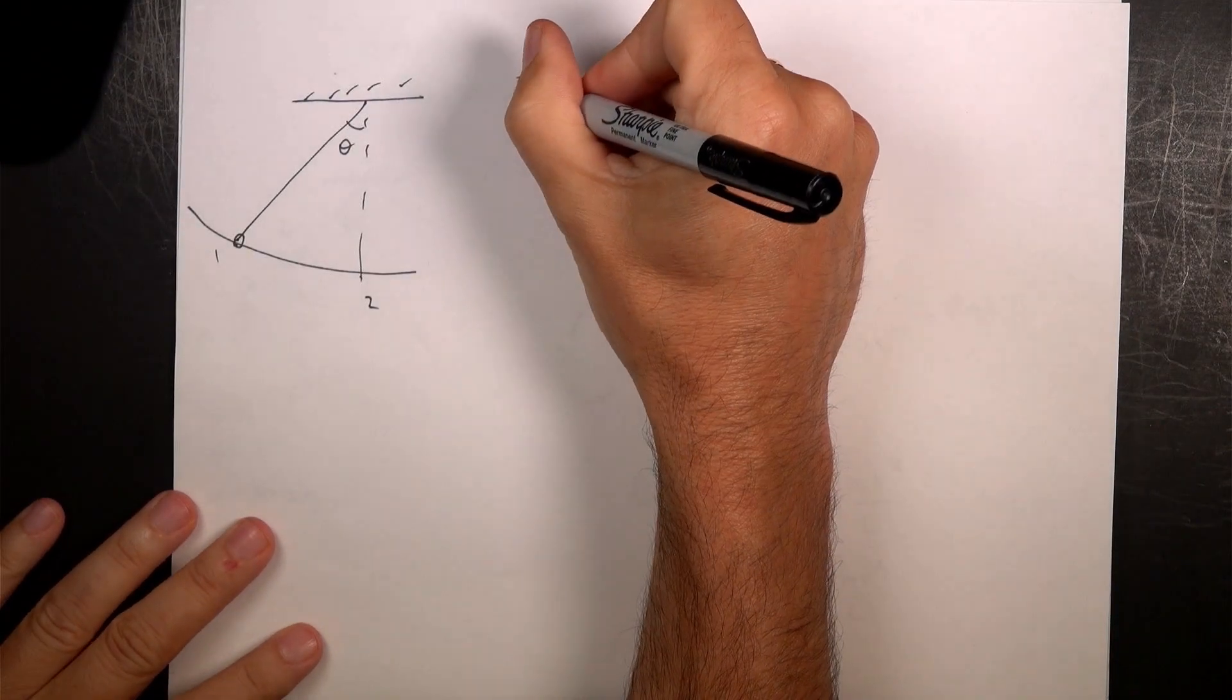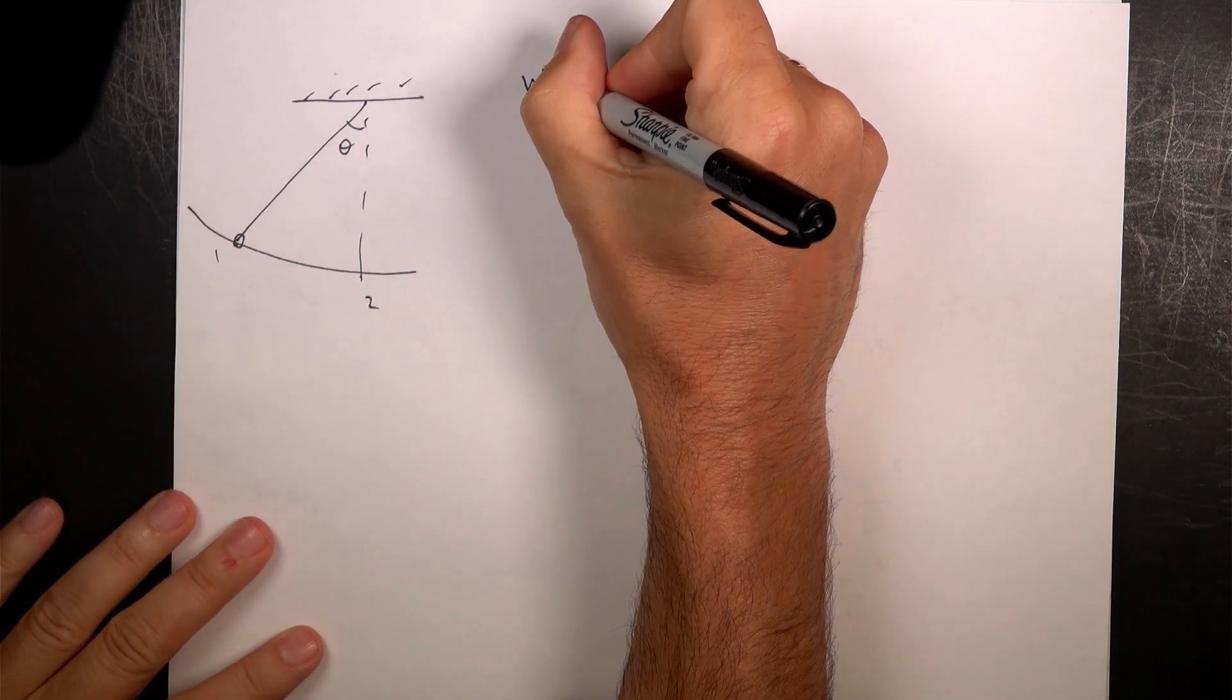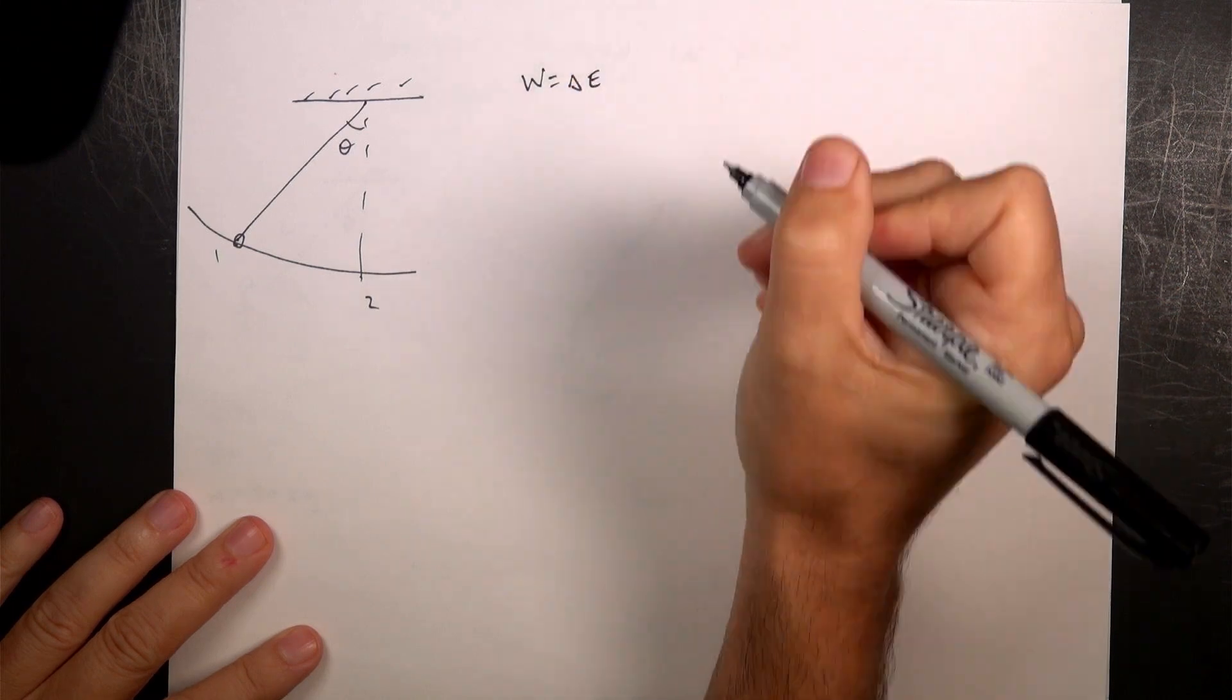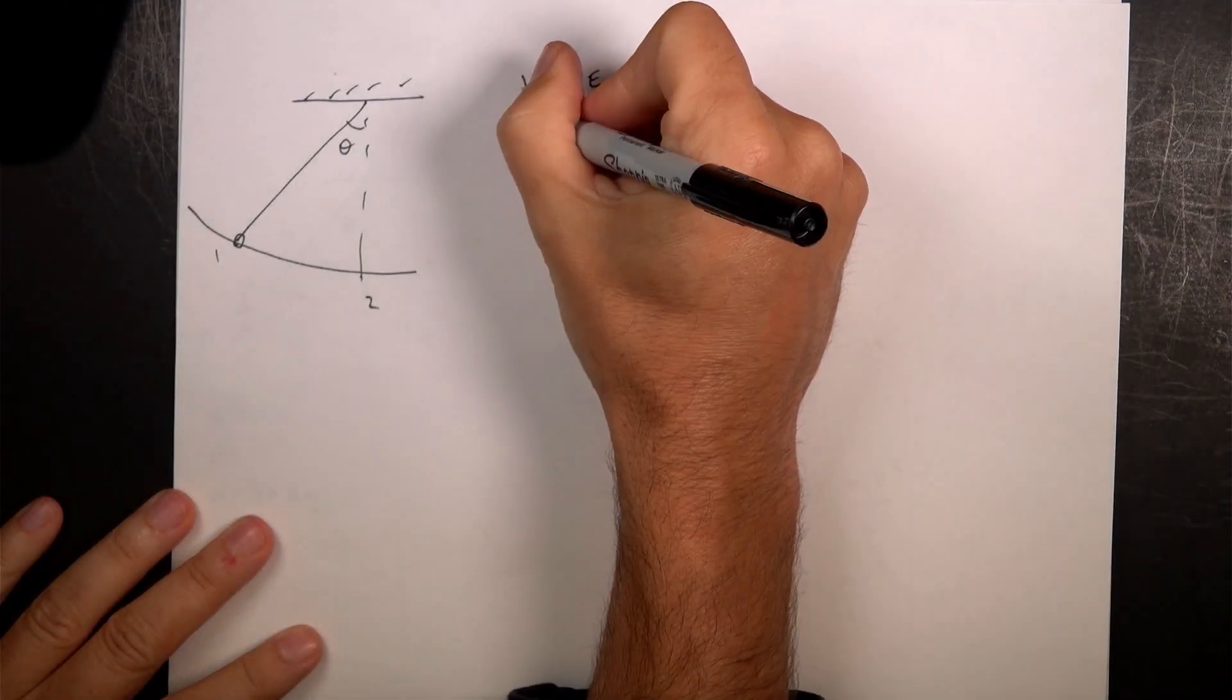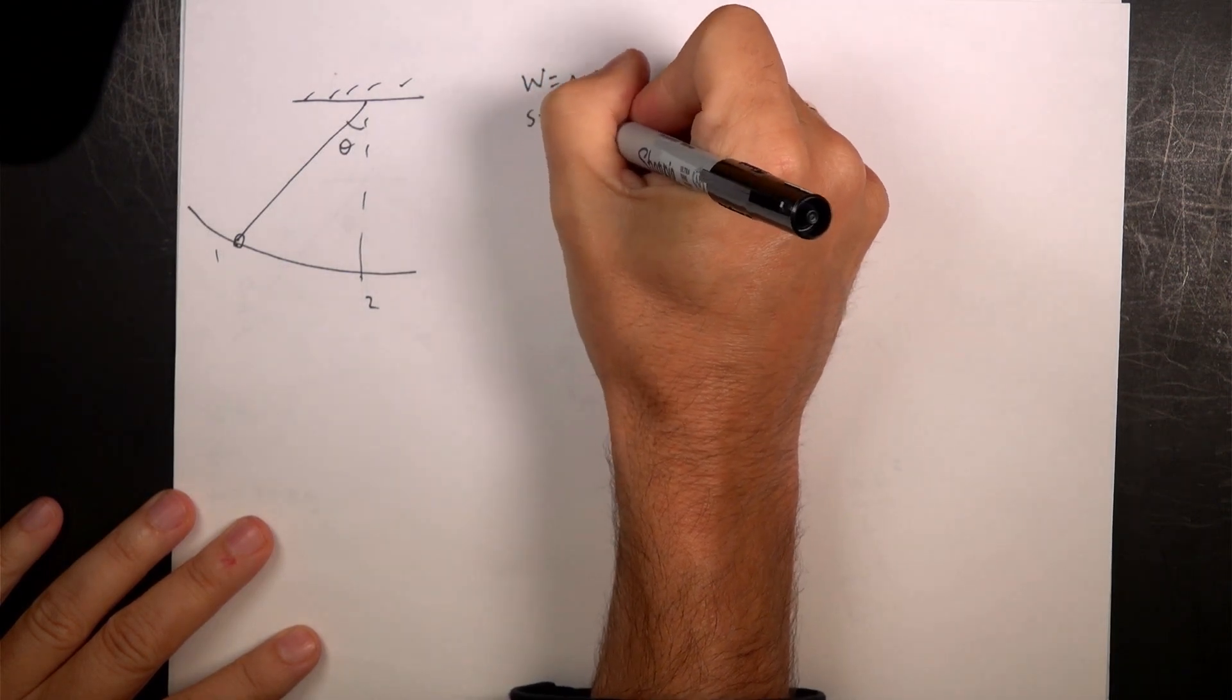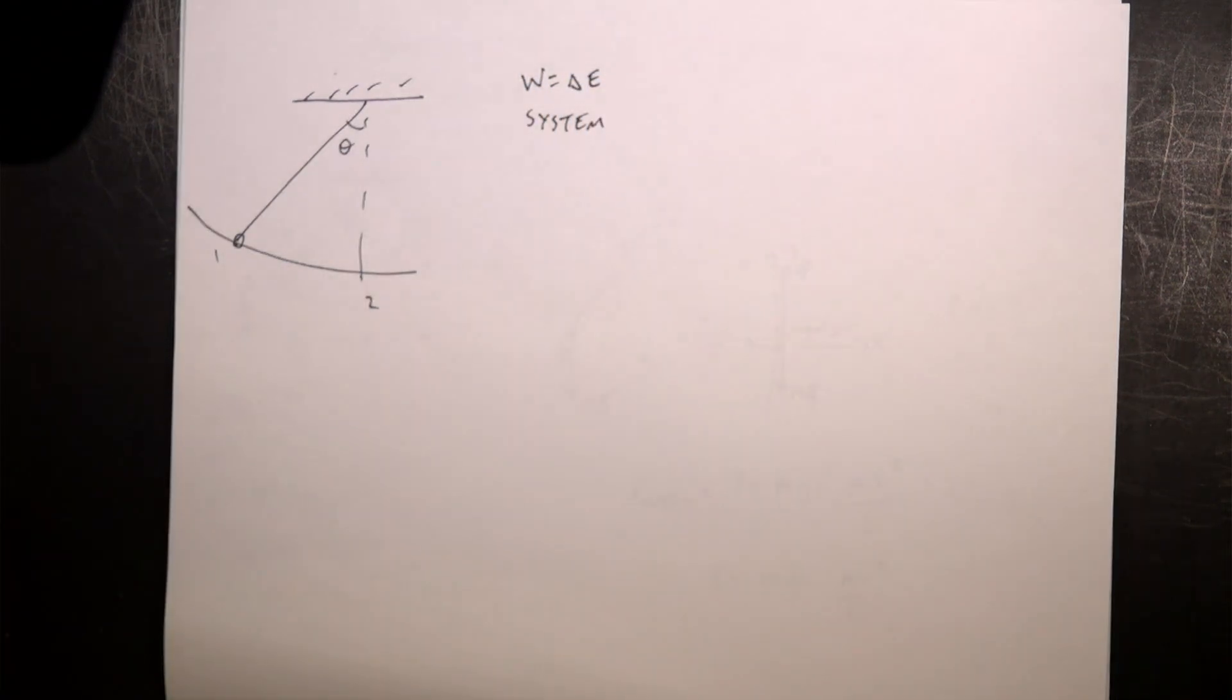I want to now use the work energy principle. This says the work is the change in energy. But in order to do that, I need to define my system. So if I don't know what my system is, I can't calculate the work. I can't calculate the change in energy because it depends on what I'm including in my system.